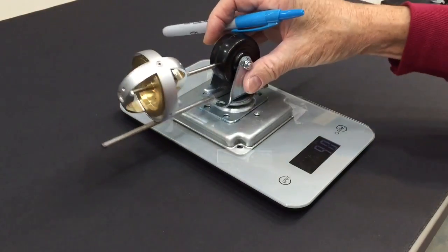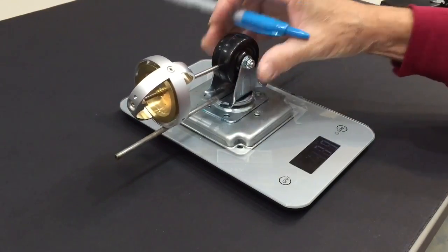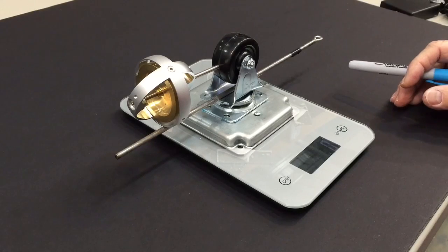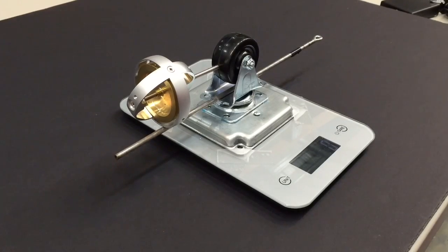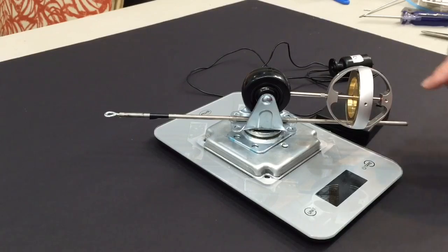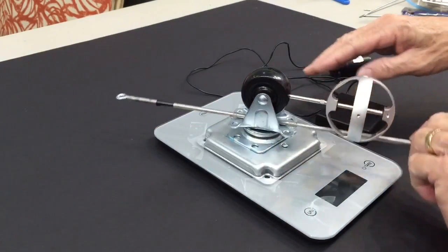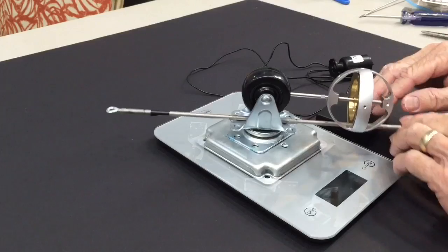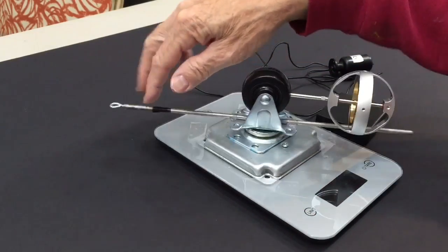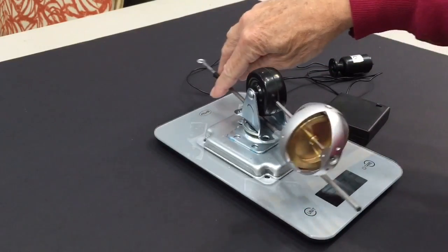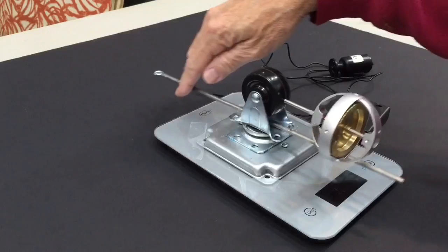It could be a little bit better bearings, those caster bearings are kind of clunky, but it does work. I added this stainless steel tubing here as a way to push against the direction of precession just to demonstrate some of the things I want to demonstrate.